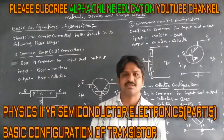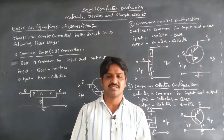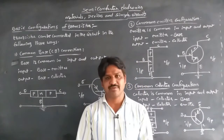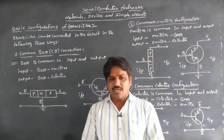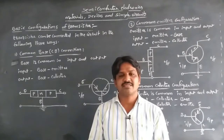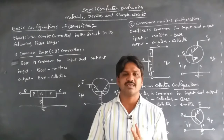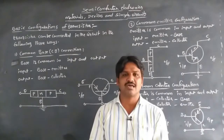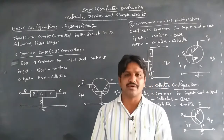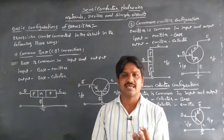After discussing transistors and their types — the PNP and NPN transistor — we also discussed the working of both. Now, if we want to connect a transistor in a circuit, we need four terminals: two for the input and two for the output. But in the transistor, we have only three terminals: base, emitter, and collector.